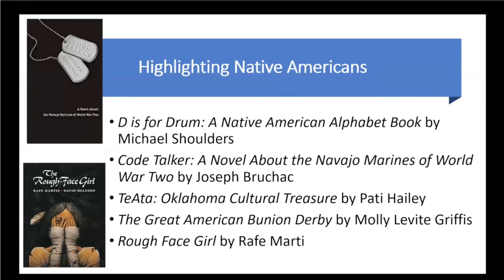Highlighting Native Americans: Code Talker, a novel about the Navajo Marines of World War II, is an excellent book. The Great American Bunyan Derby is more of a middle school book — it tells the 1928 story of Andy Payne, part Cherokee, a farm boy from Oklahoma, and his entrance in the first annual international transcontinental foot race, the over 3,400-mile race from California to New York. Rough Face Girl is a Native American Cinderella story with excellent pictures and well-done text. Interestingly, almost every culture in the world has some form of a Cinderella story.